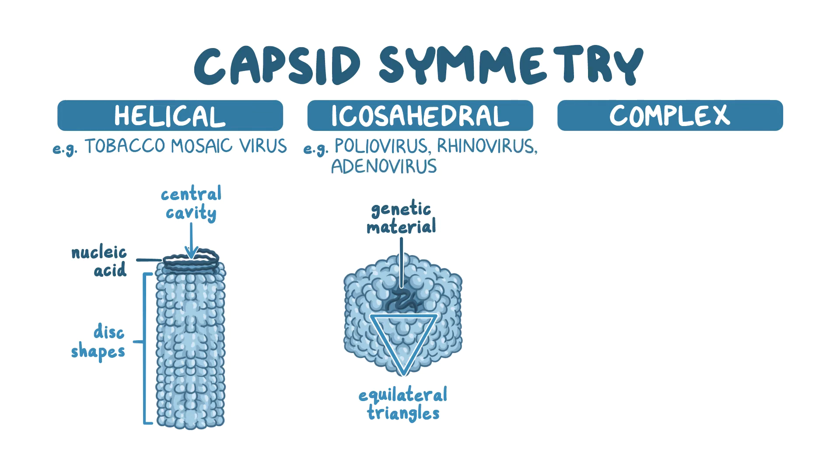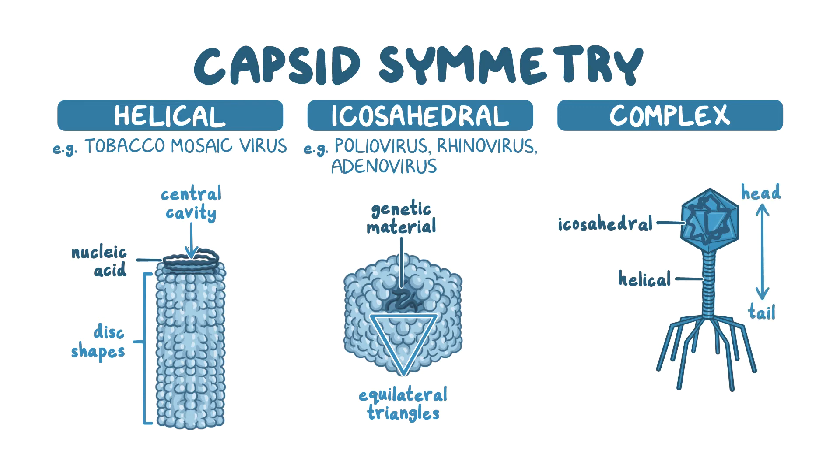Finally, the complex viruses have a combination of icosahedral and helical shape, and may have a complex outer wall or head-tail morphology. The head-tail morphology is unique to viruses that infect bacteria, called bacteriophages. They have an icosahedral shaped head and a helical shaped tail. These viruses use their tail to attach to the bacterium, and then they create a hole in the cell wall and insert their DNA into the cell using the tail as a channel.